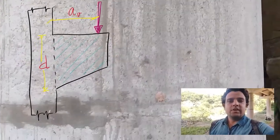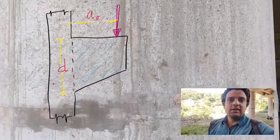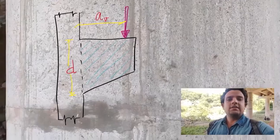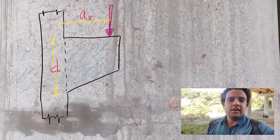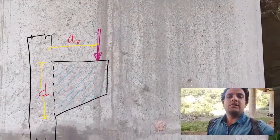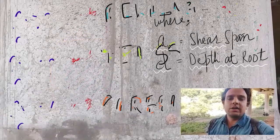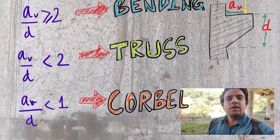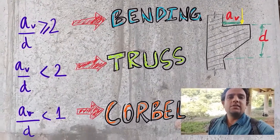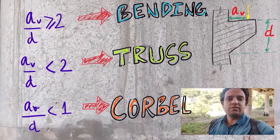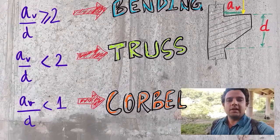In this sketch, you can see a tapered cantilever with a single concentrated load. The support is a fixed support, and the distance AV is measured from the load to the face of the support. If the ratio of AV by D is greater than 2, there is a clear indication that this structure will behave as a bending member — all forces will be resisted by bending, and this is what you can call a purely cantilever.